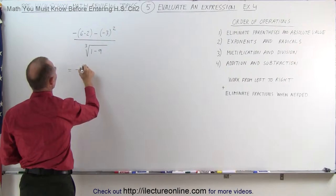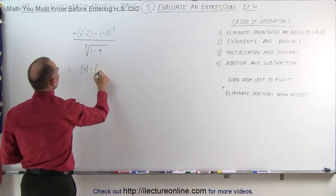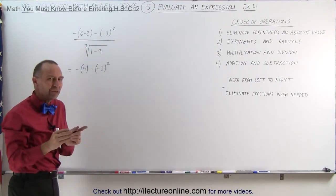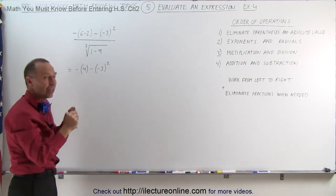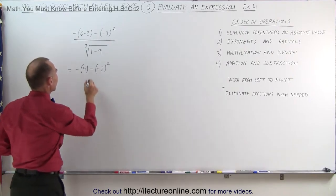So this becomes equal to minus the quantity 6 minus 2, which is 4, minus negative 3 to the second power. Or you may say, why did you keep the parentheses there? Because there was a negative sign in front of it. Whenever there's a negative sign in front of parentheses, I want to keep the parentheses there to do the right thing with the negative sign.